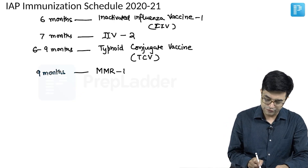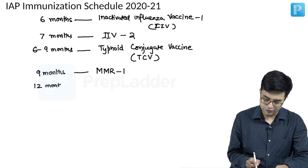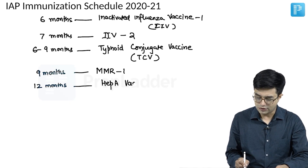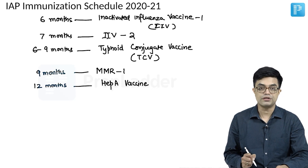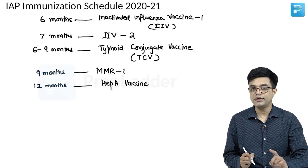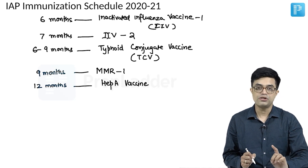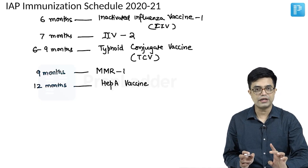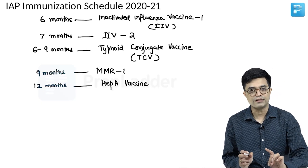Then at 12 months, that is 1 year of age, you will give hepatitis A vaccine. Hepatitis A vaccine is not part of the national immunization schedule, but it is given in the IAP schedule to all children at 12 months.